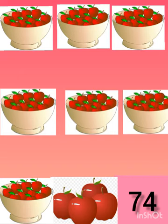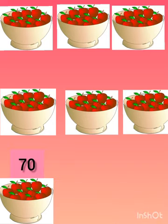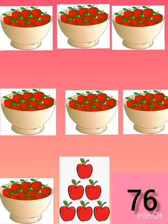In 70, if I add 4 apples, how many apples will be there? Correct — 74. Now I am adding 5 apples in 70 apples — how many apples will be there? 75. Now in 70, I am adding 6 apples — how many apples will be there now? 70 and 6 — 76. 76 apples will be there.